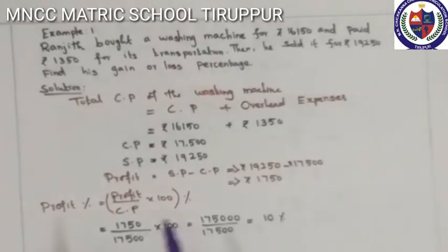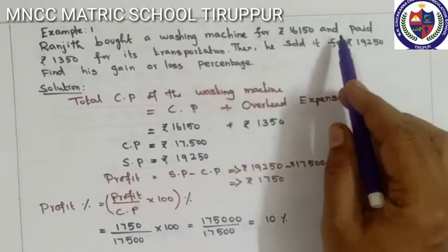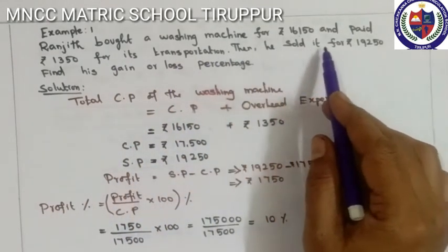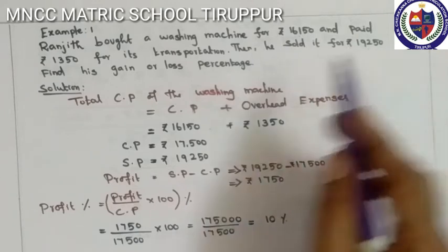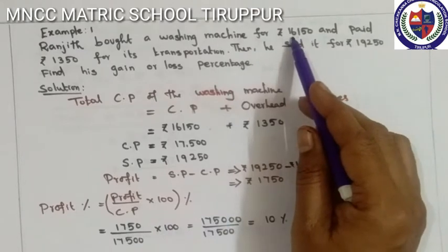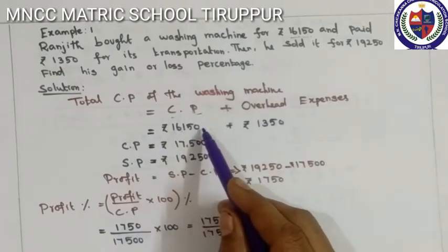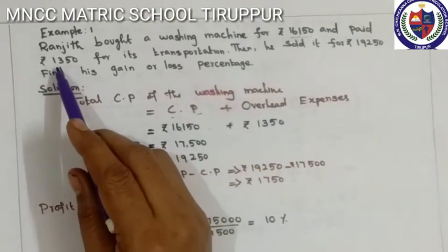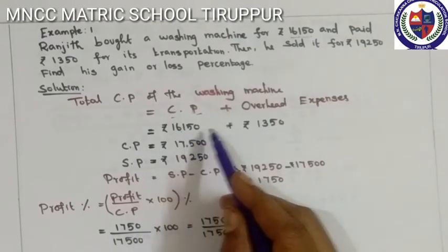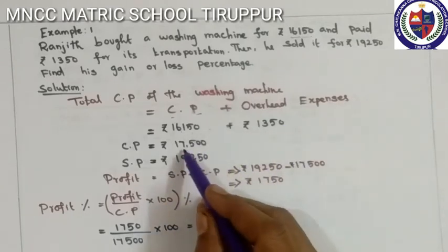Example sum: Ranjit bought a washing machine for Rs. 16,150 and paid Rs. 1,350 for transport charges, then sold it for Rs. 19,250. Find his gain or loss percentage. Cost Price of the washing machine is Rs. 16,150. Transport Charge is Rs. 1,350. Total Cost Price equals 16,150 plus 1,350 equals Rs. 17,500.